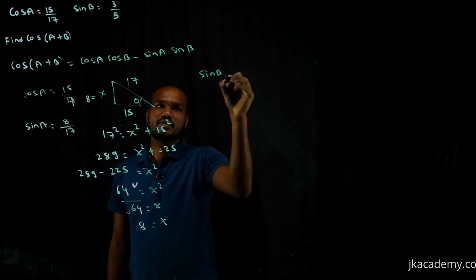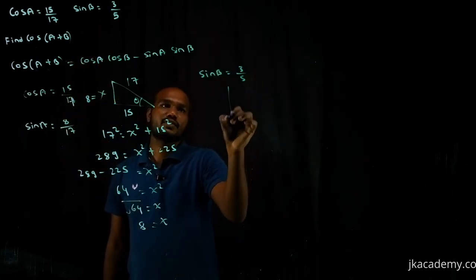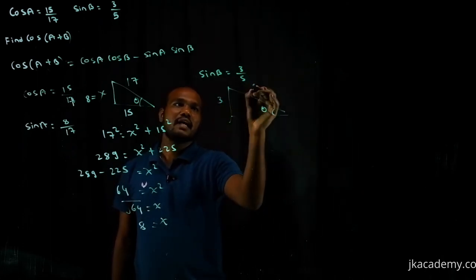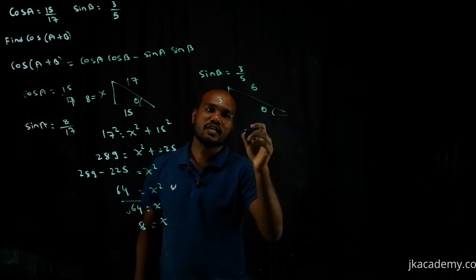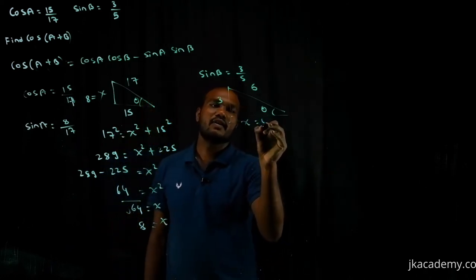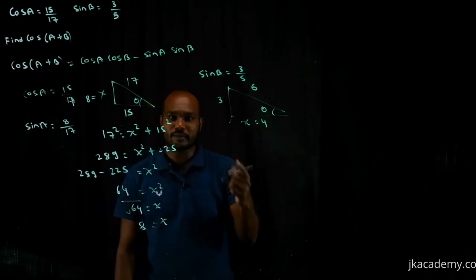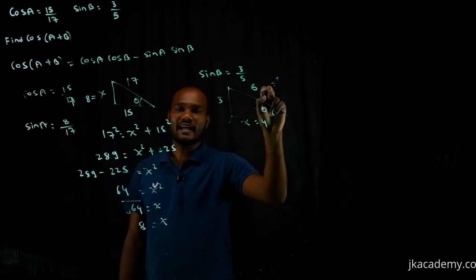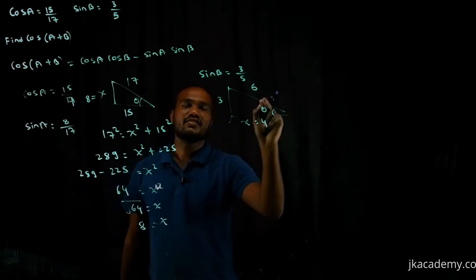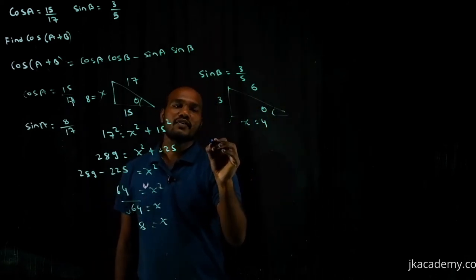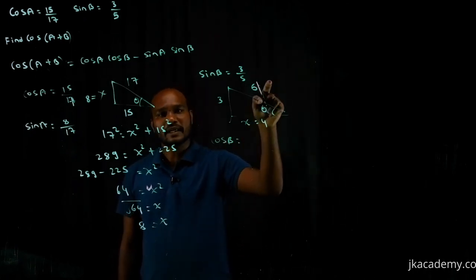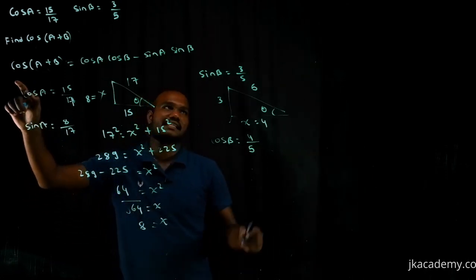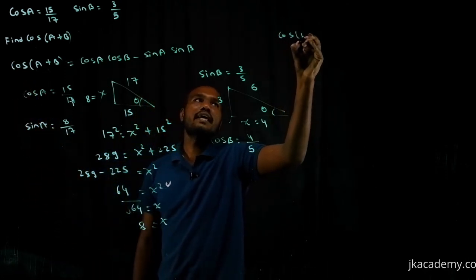The given data for sin b = 3/5, which is opposite over hypotenuse. So opposite = 3 and hypotenuse = 5. Using the 3-4-5 Pythagorean triplet, the adjacent side is 4. Therefore cos b = adjacent over hypotenuse = 4/5. Now we have all the values needed.